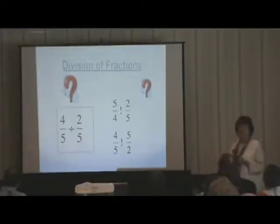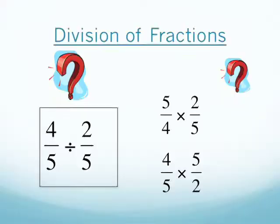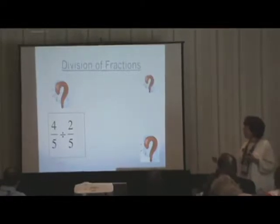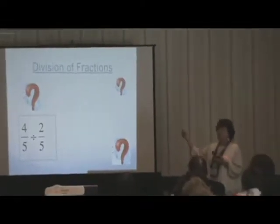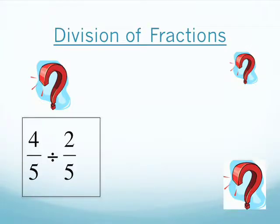And my all-time favorite — division of fractions: 'ours is not to reason why, just invert and multiply.' The problem is I don't know which number to invert. So sometimes I invert the first one, sometimes I invert the second one, depending on which way works better. Why not change to a common denominator and think about how many groups of two-fifths can I get out of four-fifths? And connect it to what they should have learned with whole numbers.